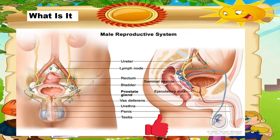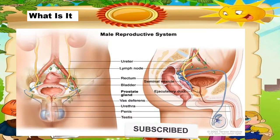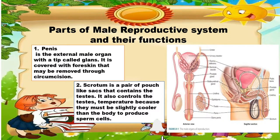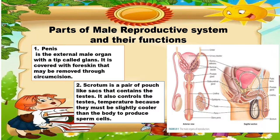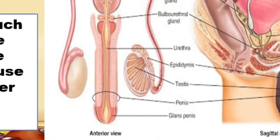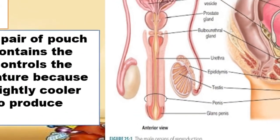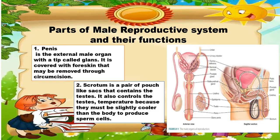Let us discuss first the different parts of the male reproductive system and their functions. First is the penis. It is the external male organ with a deep-coded glans. It is covered with foreskin that may be removed during circumcision — the glans is the part of the male organ that is cut during circumcision.